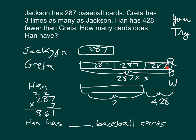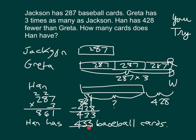Greta's amount is 861 cards. It says Han has 428 fewer than Greta, so Han's amount is less by 428. Let's see if you did your subtraction correctly. 6 becomes a 5 so that 1 can become 11. 11 ones minus 8 ones is 3. 5 tens minus 2 tens is 3. And 8 hundreds minus 4 hundreds is 4.